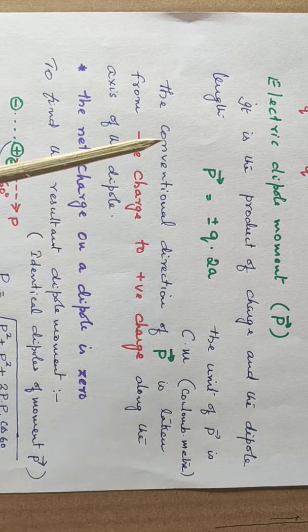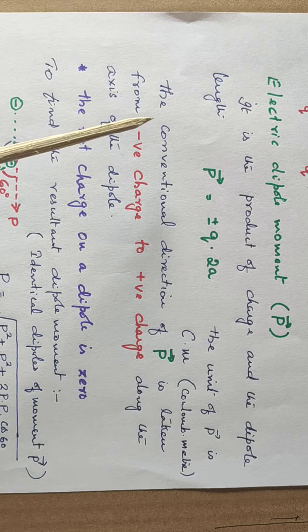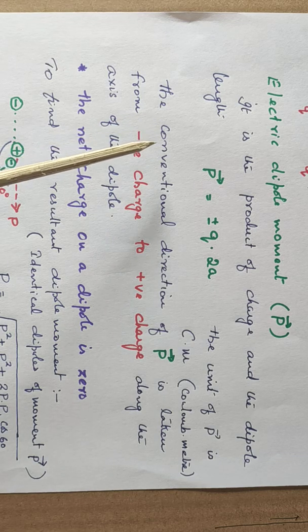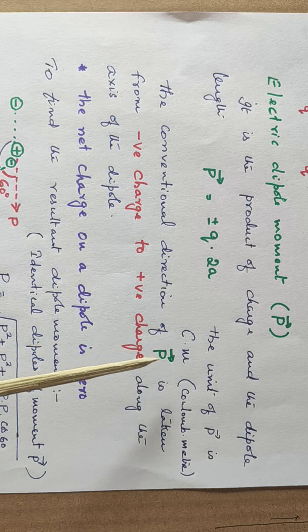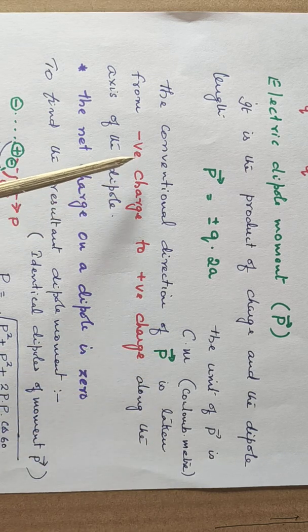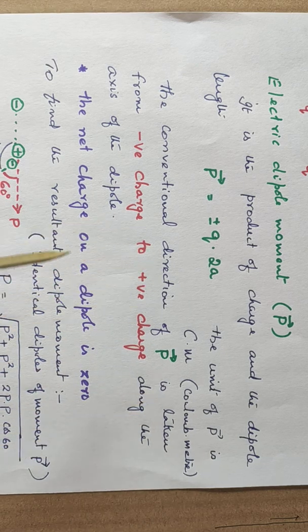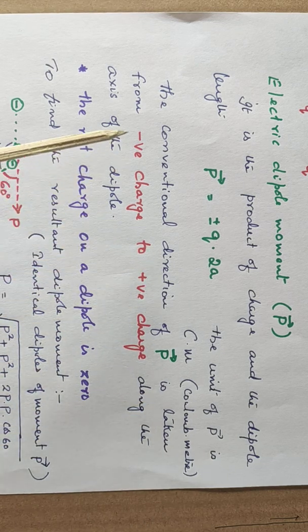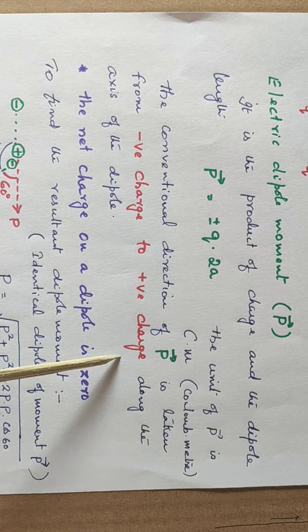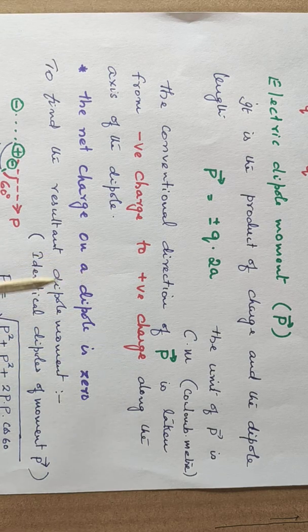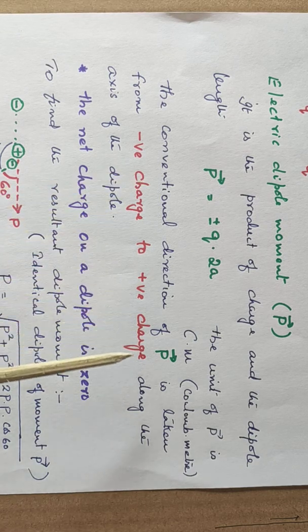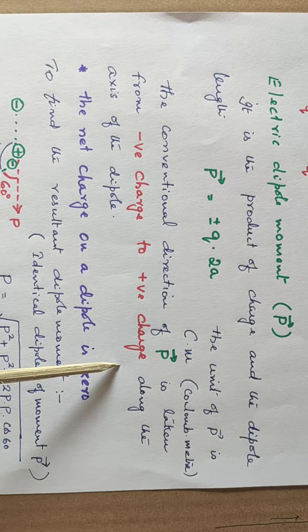And P being a vector, you must be noting the direction of the vector and the conventional direction of the vector P is taken from negative charge to the positive charge along the axis of the dipole. This is very very important for further calculation. So the direction is from negative charge to positive charge.